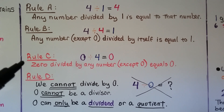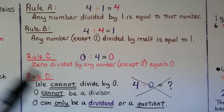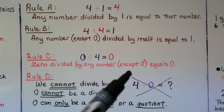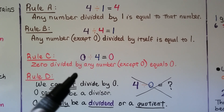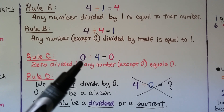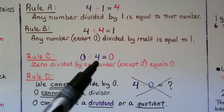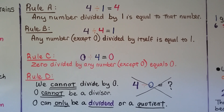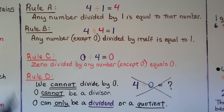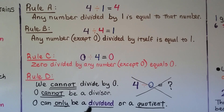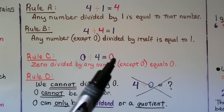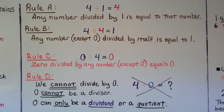Rule C says 0 divided by any number except 0 is going to equal 0. So if 0 is the dividend and it's divided by some number, the quotient is going to be 0. And our last rule — Rule D — says we cannot divide by 0. We can't have 0 as a divisor. 0 can only be a dividend or a quotient; it can't be the divisor.